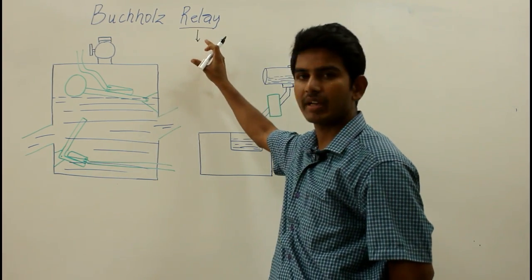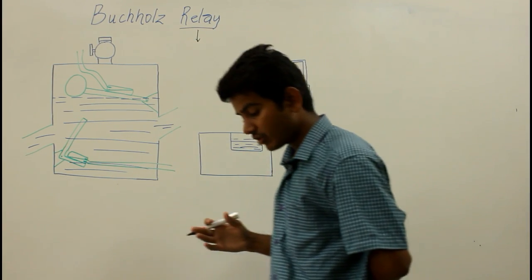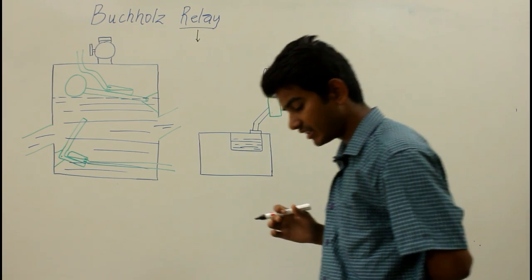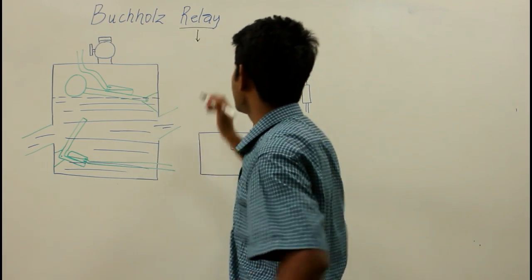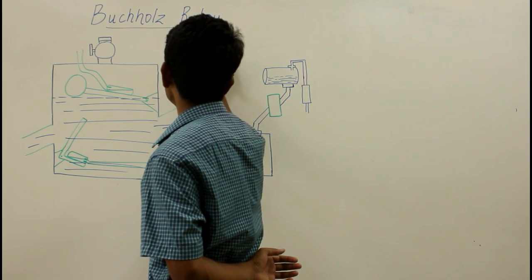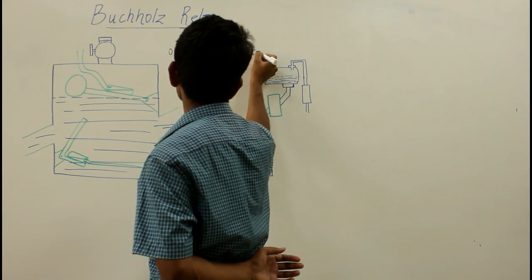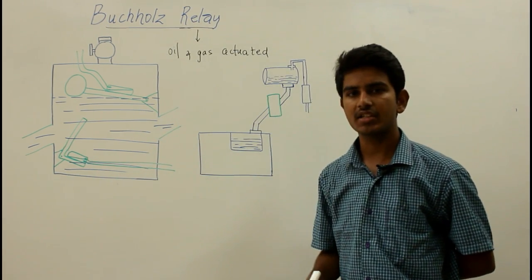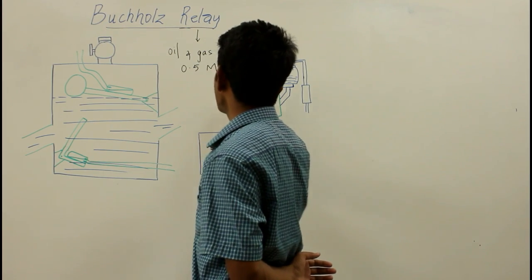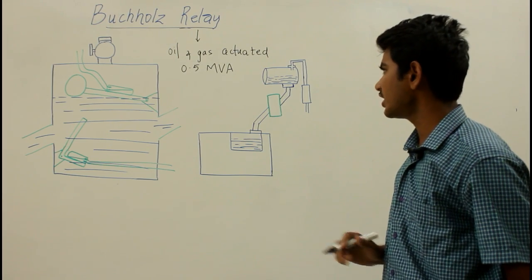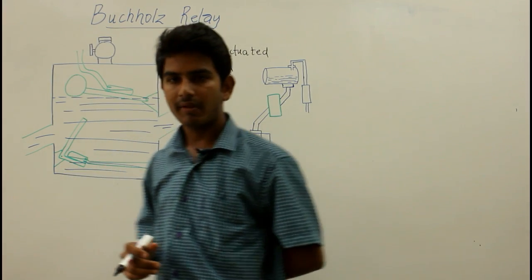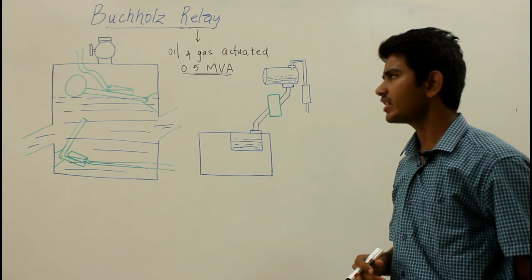Relays can be electromagnetic relays, solid state relays, reed relays, thermal relays, or hybrid relays. The Buchholz relay is a type of oil and gas actuated protective relay which is universally employed on all oil-immersed transformers having a rating more than 0.5 MVA. The Buchholz relay is not provided for transformers with a rating below 0.5 MVA because of economical considerations.